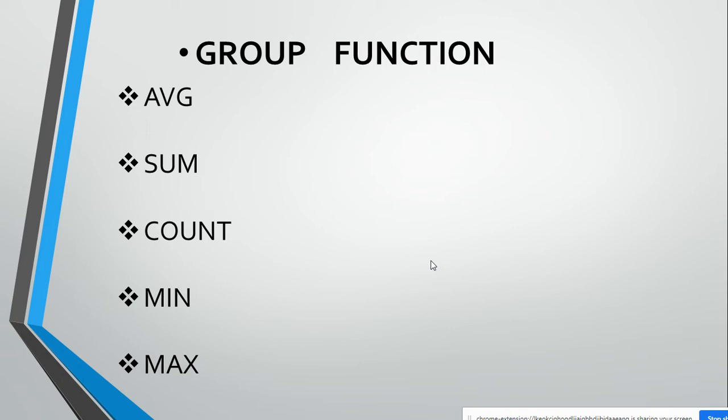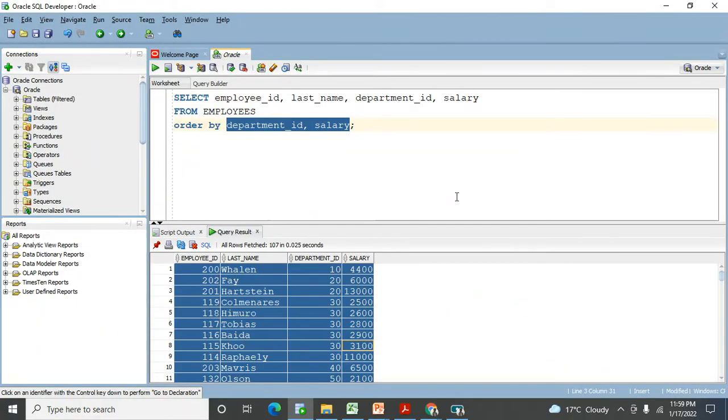In my table: to check the maximum salary I will use MAX; to check the minimum salary I will use MIN; to count how many people are working in my company I will use COUNT; to get the total salary given to all employees I use SUM; and for average salary — if five people are there, it takes the total and divides by five — I use AVG. Let's see all these functions practically.